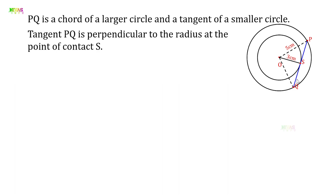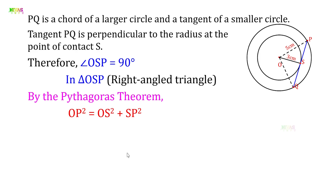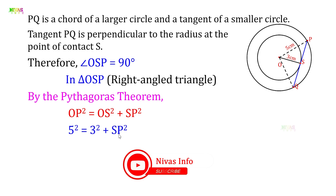So here the triangle OSP has a right angle. In triangle OSP, this is a right-angled triangle, so we apply the Pythagorean theorem. OP is 5 cm and OS is 3 cm, so: OP² = OS² + SP², which gives us 5² = 3² + SP².